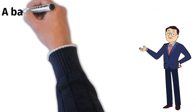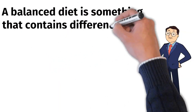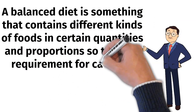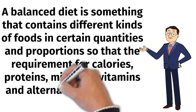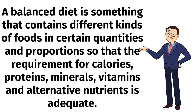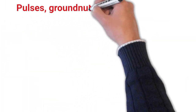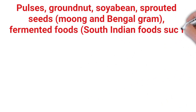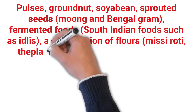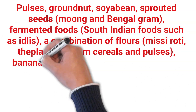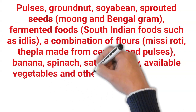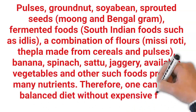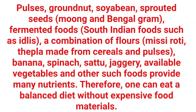A balanced diet is something that contains different kinds of food in certain quantities and proportions so that the requirement for calories, proteins, minerals, vitamins, and other nutrients is adequate. Pulses, groundnut, soybean, sprouted seeds, fermented foods, a combination of flours, banana, spinach, sattu, jaggery, available vegetables, and other such foods provide many nutrients. Therefore, one can eat a balanced diet without expensive food materials.